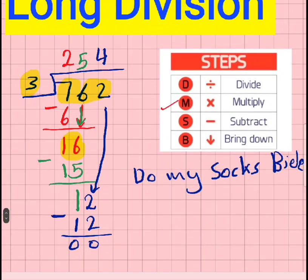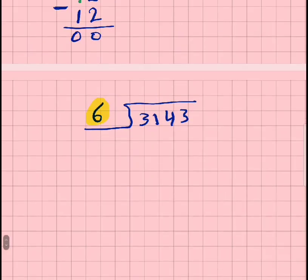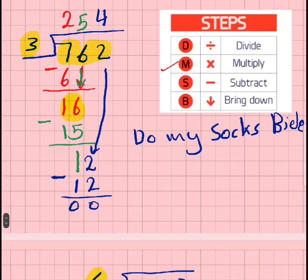We have 3143 divided by 6. Now we're going to set this up the same as the previous question where we have the divisor, the 6, like this. Then we have this frame for working out. Within that we have 3143. The working out will go down here, the answer will end up up there. We're going to be using the steps of divide, multiply, subtract, bring down. So let's do that.